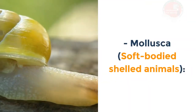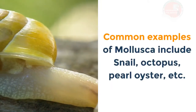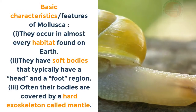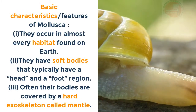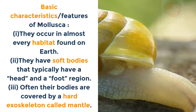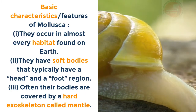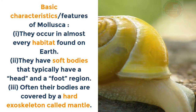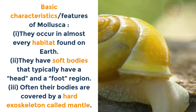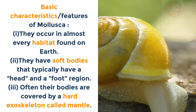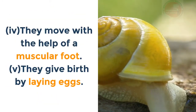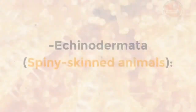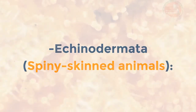Mollusca — soft-bodied shelled animals. Common examples include snail, octopus, pearl oyster, etc. Basic characteristics: i. They occur in almost every habitat on earth. ii. They have soft bodies that typically have a head and a foot region. iii. Often their bodies are covered by a hard exoskeleton called the mantle. iv. They move with the help of a muscular foot. v. They give birth by laying eggs.